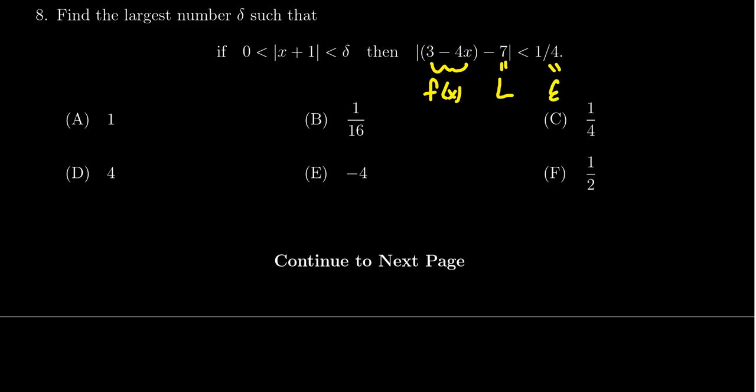Delta is what we have to find. We can rewrite x + 1 as x - (-1), identifying that a is -1. So we want to know, in a symmetric manner, how much to the left or right of -1 should we be to guarantee that our function is within 1/4 away from 7.